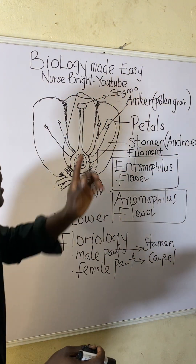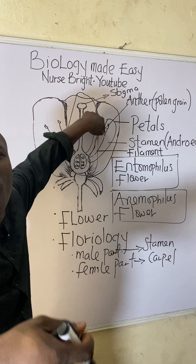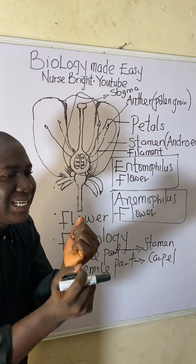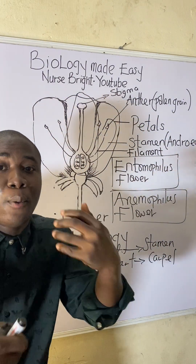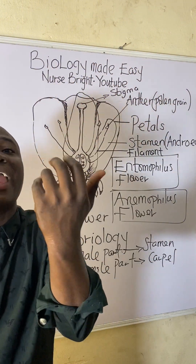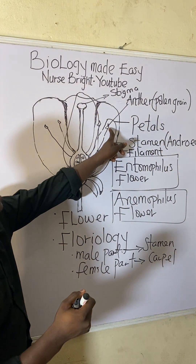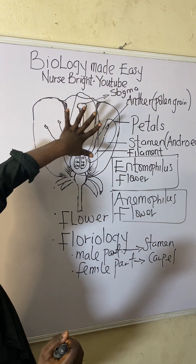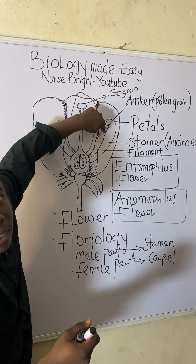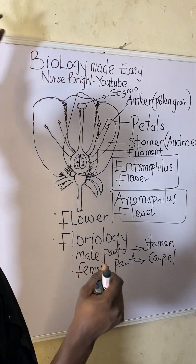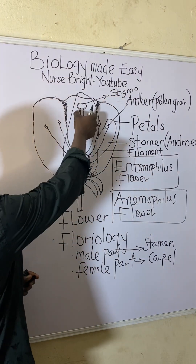The stigma is where the pollen grain, produced by the anther, lands during the process of pollination. The stigma is a sticky structure. For self-pollination, pollen grain is transferred from the anther to the stigma of the same flower. For cross-pollination, pollen from this anther moves to the stigma of another flower.